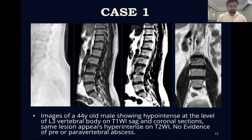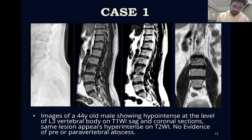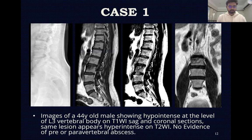Case one: Images of a 44-year-old male showing hypointense signal at the level of the L3 vertebral body on T1-weighted sagittal and coronal sections. The same area appears hyperintense on T2-weighted images. No evidence of pre- or para-vertebral abscesses was noted.